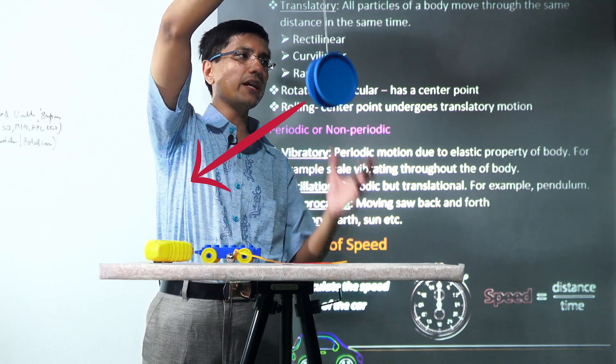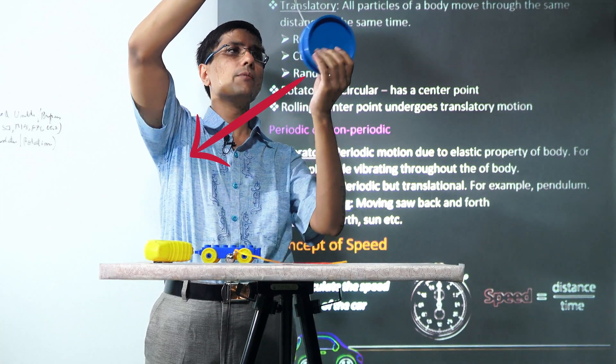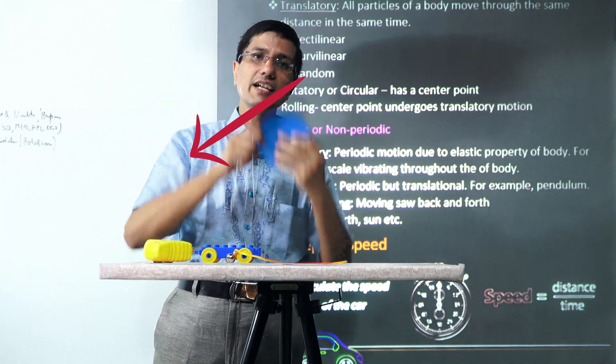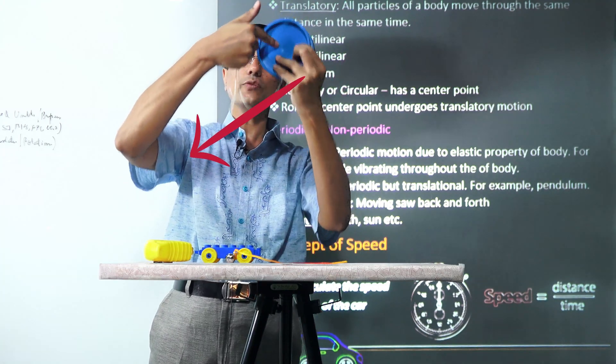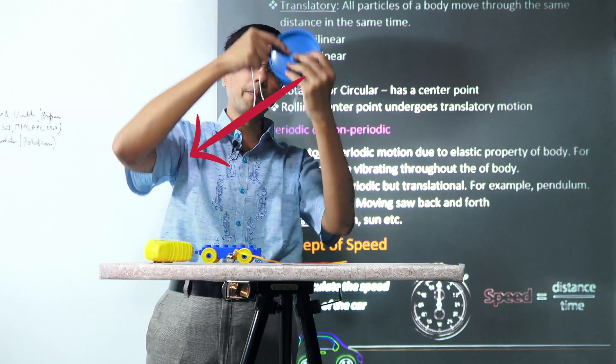This yoyo is rolling on the string because it is exhibiting both rotation as well as translation. The axis of rotation itself is moving up and down.